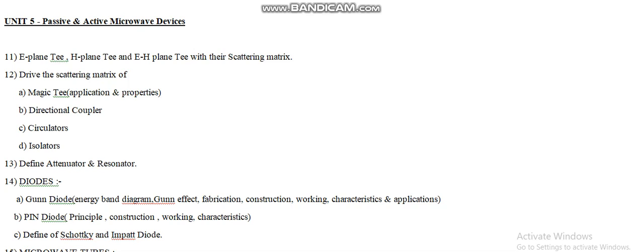Moving on to question number twelve, we have to derive the scattering matrix for four devices: magic tee, directional coupler, circulator, and isolators. This is the most important and repeated question, so study it seriously. Magic tee is especially important because the examiner can also ask for its applications and properties.